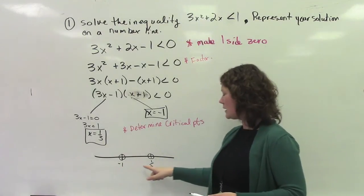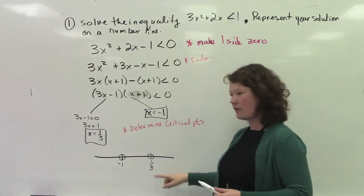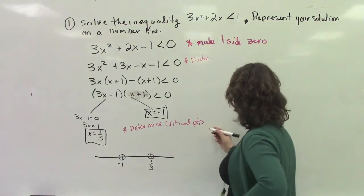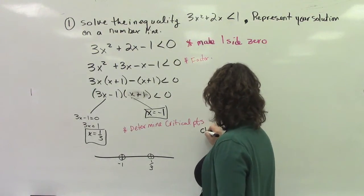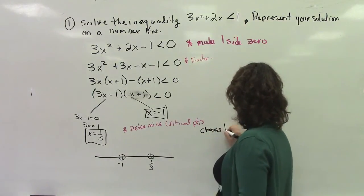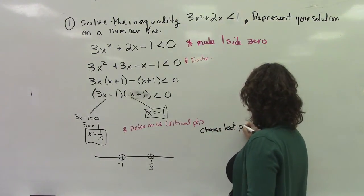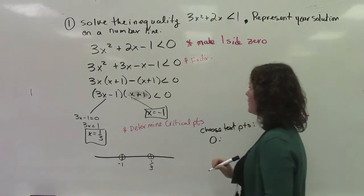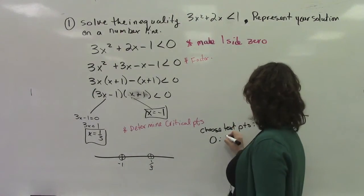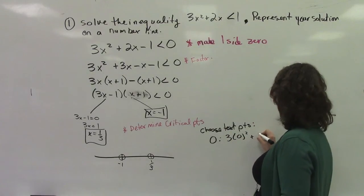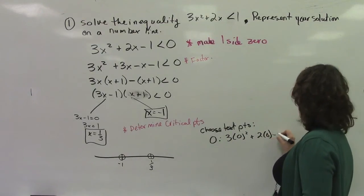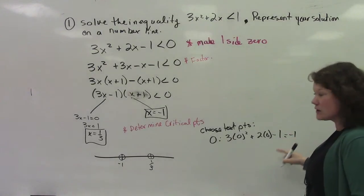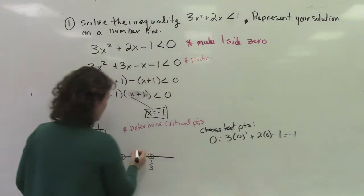So if I were to pick a number between negative 1 and 3, the easiest one for me would be to pick 0. So I pick 0. So choose test points between these options. So choose 0 as a test point. If I substitute 0, 3 times 0 squared plus 2 times 0 minus 1, that just equals negative 1. That's negative. So I'm going to write negative here.